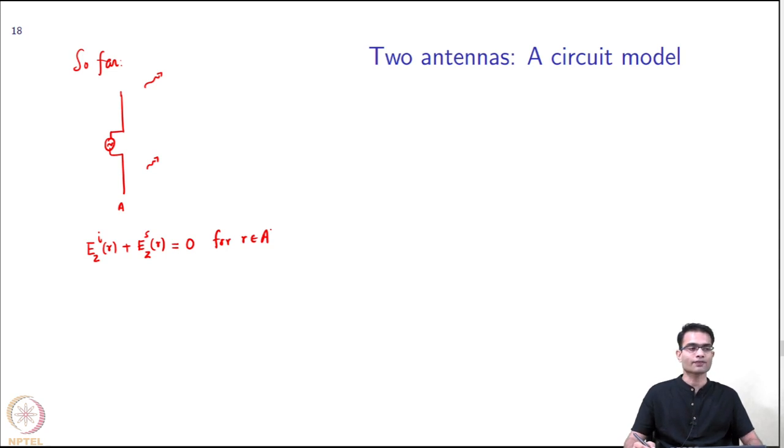Now, what happens if there is some other object in the vicinity of this antenna? That object will also have some current induced - the field will fall on it, induce some current. That induced current in turn will radiate another field, that field will come and fall on this antenna. If this boundary condition is not true, my solution changes. My current distribution changes. If my current distribution changes, what happens to my impedance? It will change.